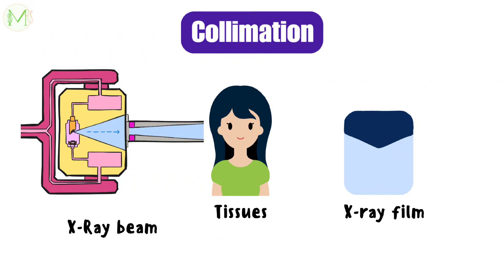But the majority of scattered photons travel in other directions, which adds to the fog of the film, causing film fog and degrading the image by uniformly exposing the film. So in order to prevent that, we need something called a collimator.